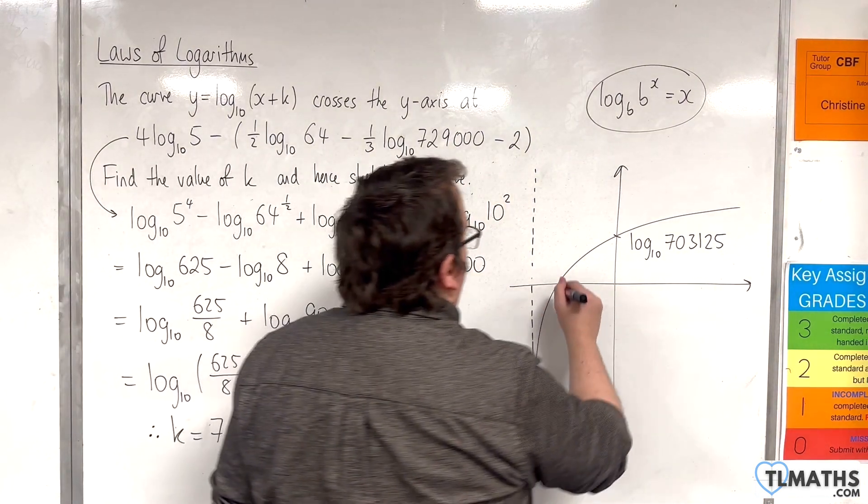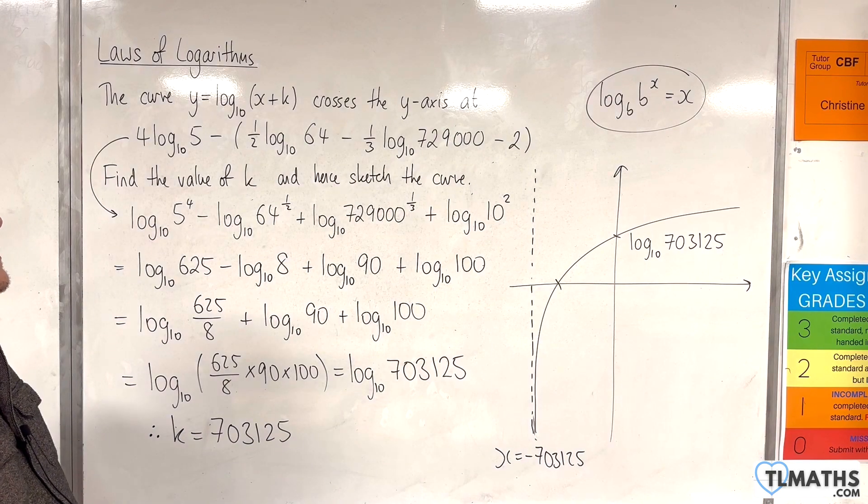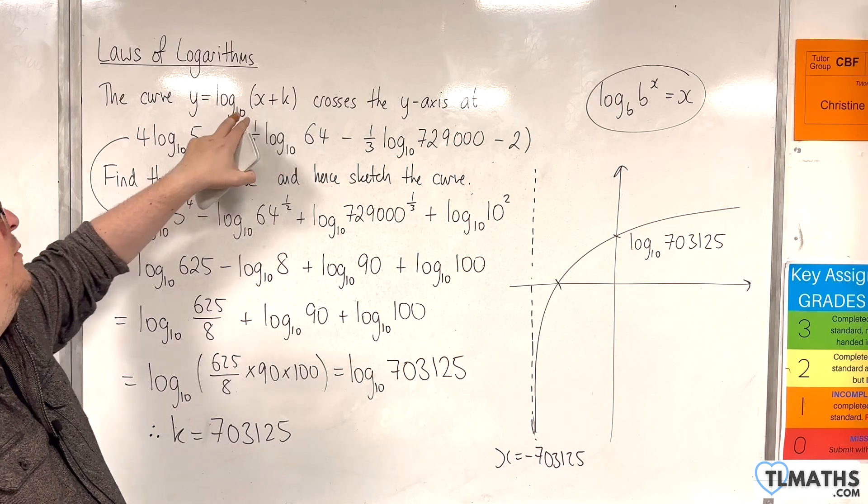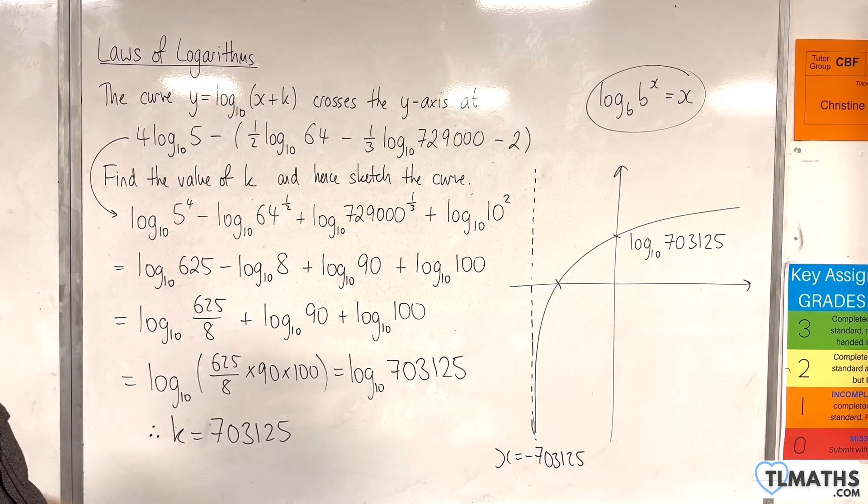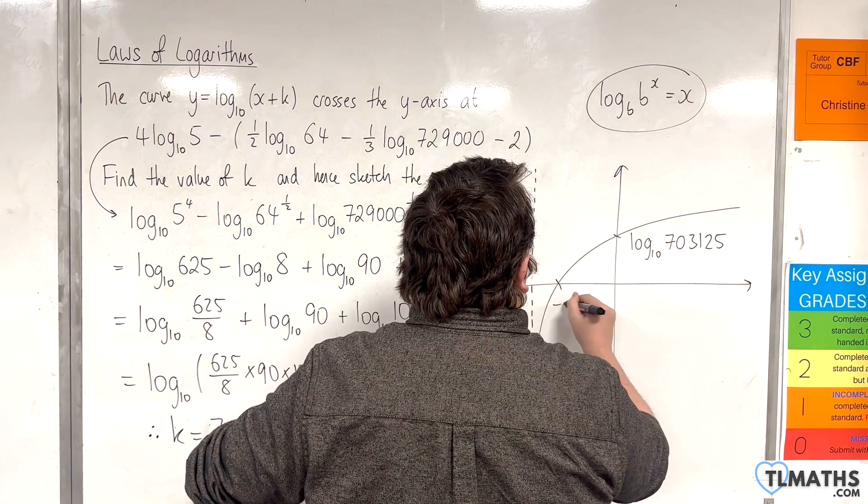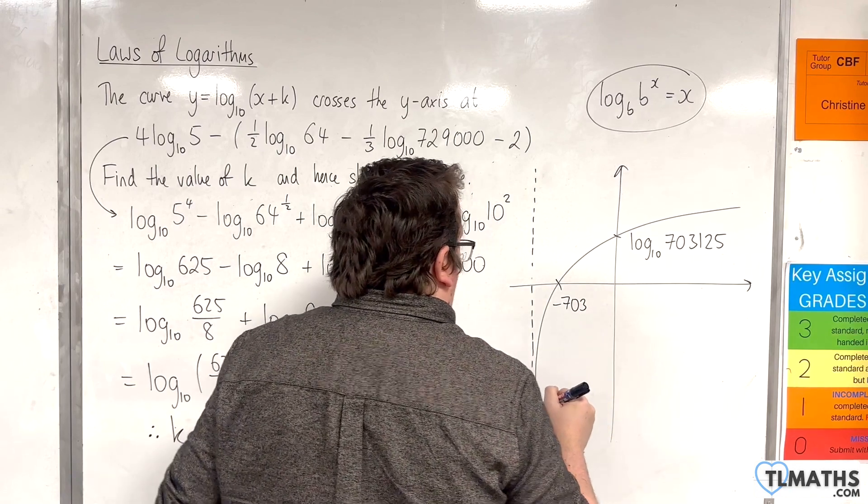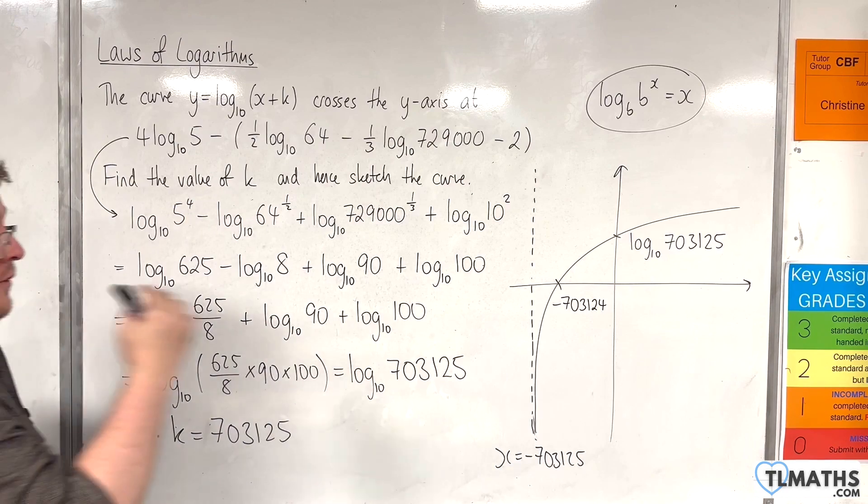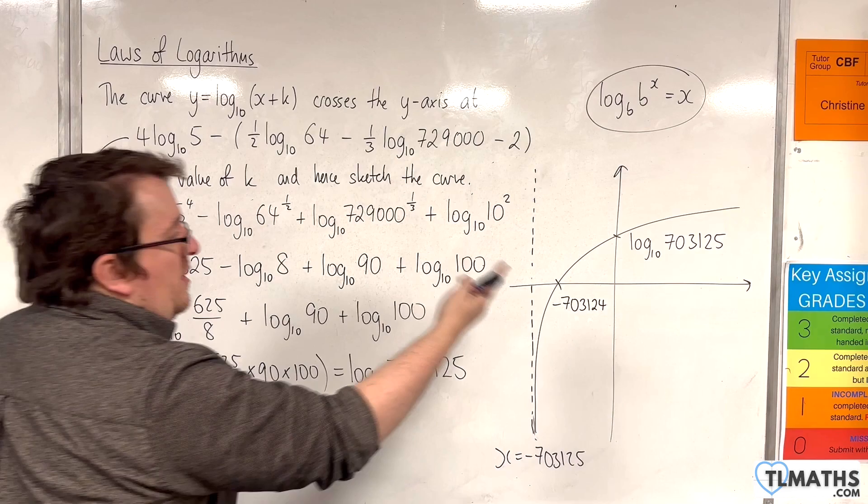And this point here, where it crosses the x-axis, is when y is 0, which would need our bracket to be equal to 1. Okay, because it will be 10 to the 0 is 1. So if k is that, then this value will need to be minus 703,124, because that value plus that will make 1. And so that is my sketch.